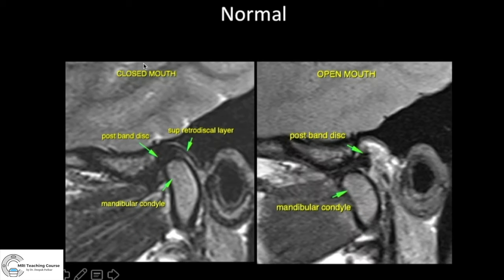This is normal closed mouth and this is normal open mouth. You can see the mandibular condyle, and here is the articular disc. On open mouth, the mandibular condyle has moved anteriorly and the articular disc still maintains its relation with the mandibular condyle — now the central portion is more in relation to the condyle. We evaluate these on sagittal images; coronal images can also be used in open and closed mouth, but sagittal is primary.